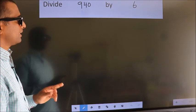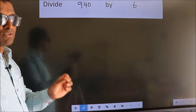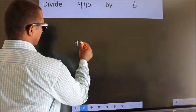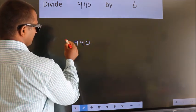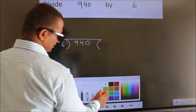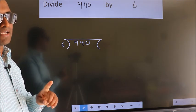Divide 940 by 6. To do this division, we should frame it in this way. 940 here, 6 here. This is your step 1.